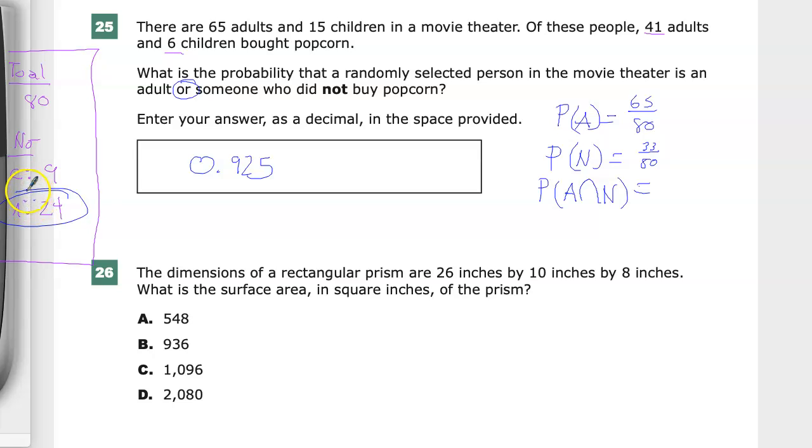And then the overlap. So here they are, I circled it earlier at some point. So no adults, 24 out of 80.